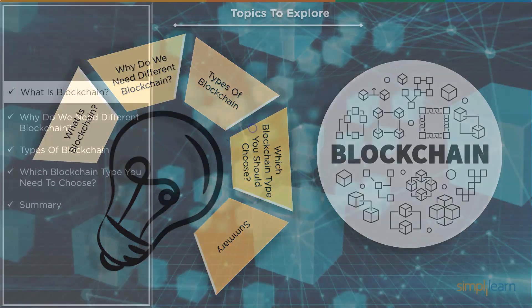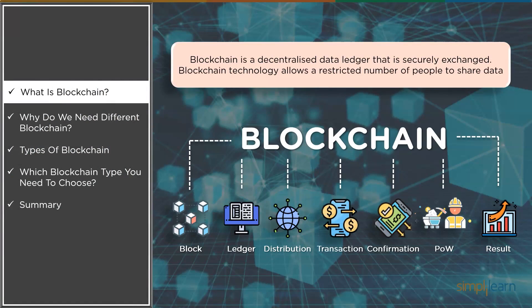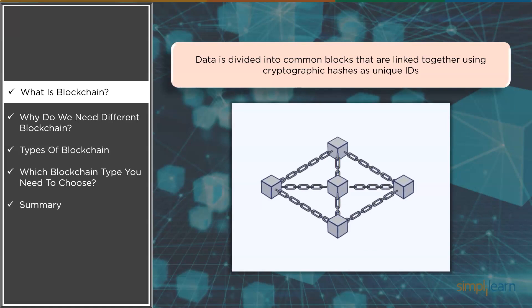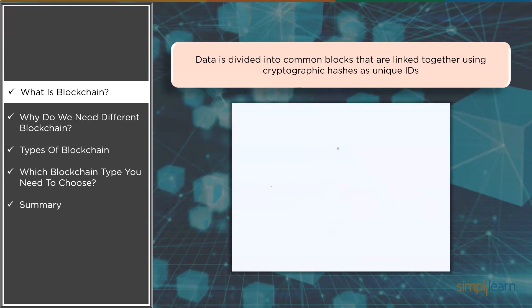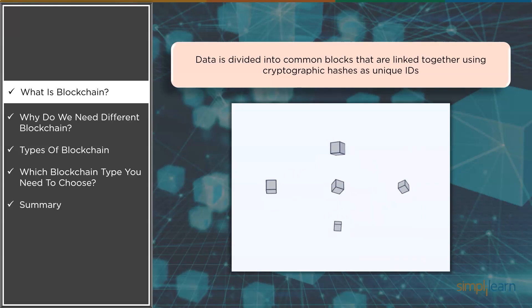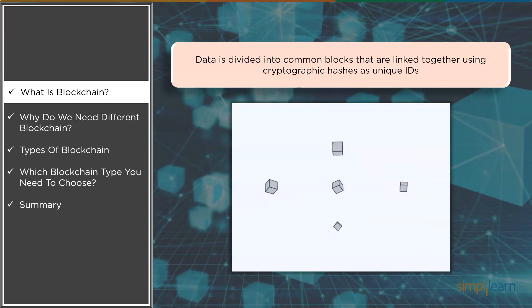So coming to what is blockchain — blockchain is a decentralized data ledger that may be safely exchanged. Blockchain technology allows a restricted number of people to share information. Transactional data from numerous sources may be readily collected, integrated, and shared using blockchain cloud services. Basically, data is divided into common blocks that are linked together using cryptographic hashes as unique IDs. Data integrity is ensured via blockchain, which uses a single source of truth to eliminate data duplication and increase security. Fraud and data tampering is prevented since data can't be changed without the permission of the parties. The contents of a blockchain ledger can be shared but not changed — if someone tries to change data, all participants will be notified and the perpetrator will be identified.